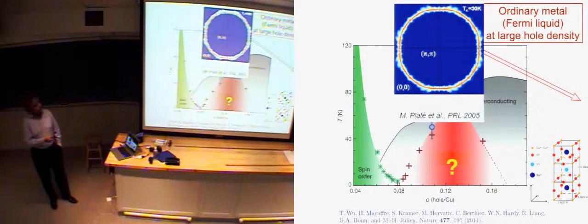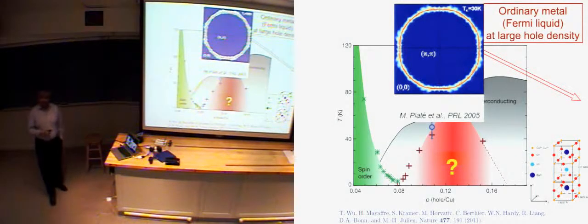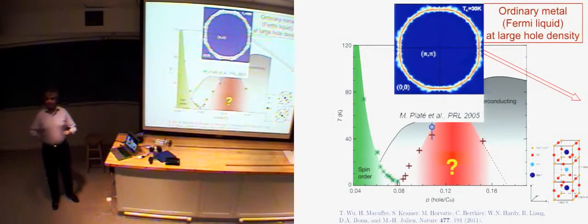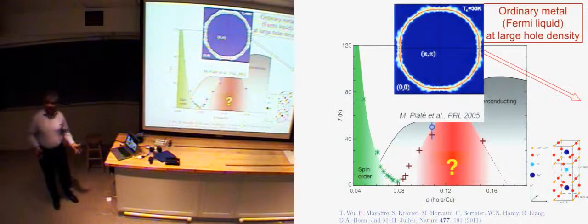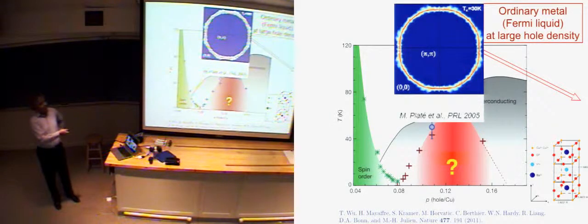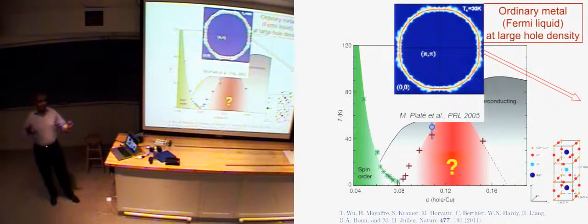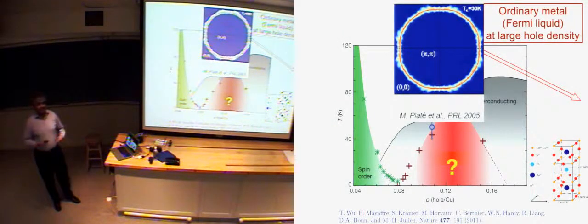If you go to very high doping, then you have a good metal — the kind of metal you'd learn about in solid state 101 — where you just take electrons moving on this lattice and have them occupy the lowest energy states. The boundary of the occupied states gives you the Fermi surface, and the area enclosed by the Fermi surface is equal to the density of electrons. All those classic theorems of solid state physics work perfectly provided the hole density is large enough. This is a photoemission measurement of the Fermi surface, and really everything works. It's a nice metal, just like copper, gold, silver, and our theories work beautifully.